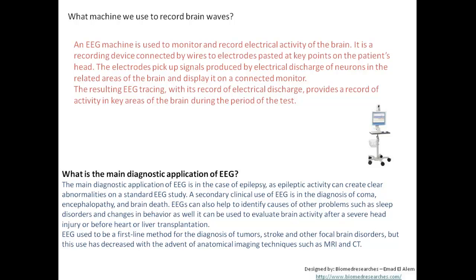EEGs can also help identify causes of other problems such as sleep disorders — some people have problems during sleep, such as apnea — and changes in behavior as well. It can be used to evaluate brain activity after a severe head injury or before heart or liver transplantation. So the diagnostic application of EEG is used mainly for the diagnosis of epilepsy, but secondary uses include coma, encephalopathy, brain death, sleep disorders, changes in behavior, and evaluating the patient before transplantation.